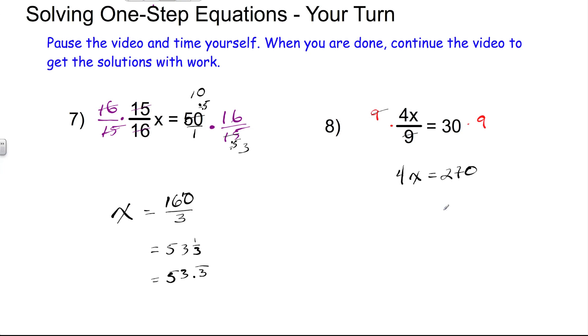Next, we will divide each side by 4. On the left-hand side, the 4's divide out, leaving us with 1x being equal to, and then 270 divided by 4. Well, we could reduce that fraction by a factor of 2. 4 divided by 2 is 2, and 270 divided by 2 is 135.